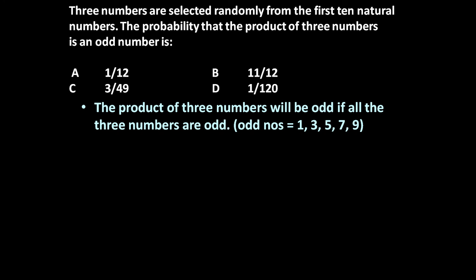To answer this question, first let us see when the product of 3 numbers will be odd. If all 3 numbers are odd — because even if one number is even, the product will be even. So we have to select 3 numbers, and if all 3 selected numbers are odd, then only their product will be odd.